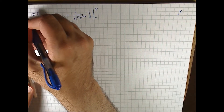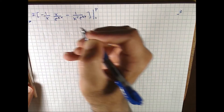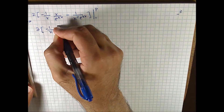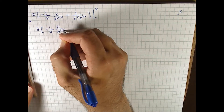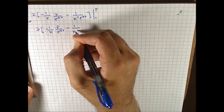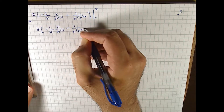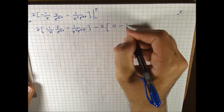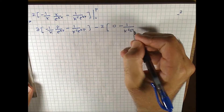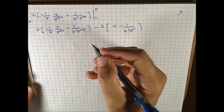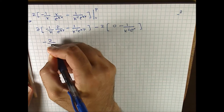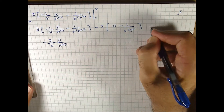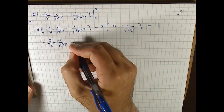So we get 2 times negative 1 over k times p over e to the kp, minus 1 over k squared times 1 over e to the kp, minus 2 times — plugging in 0, the x term gives 0, and e to the 0 is just 1 — so minus 1 over k squared. This whole expression is equal to 1.